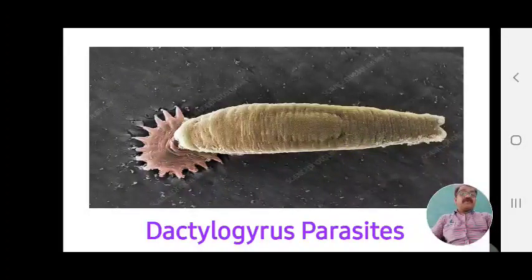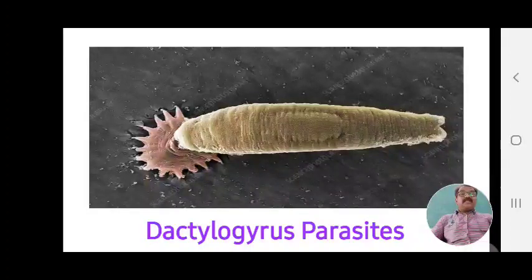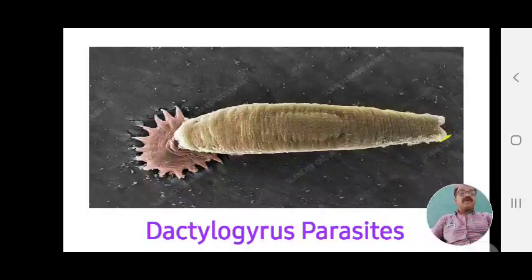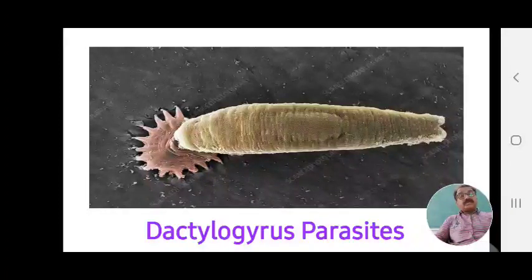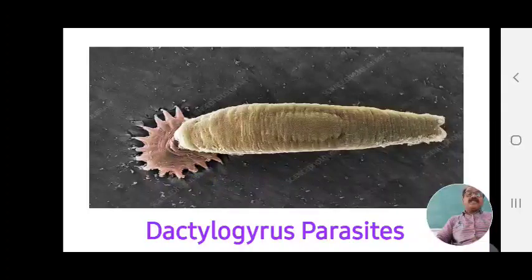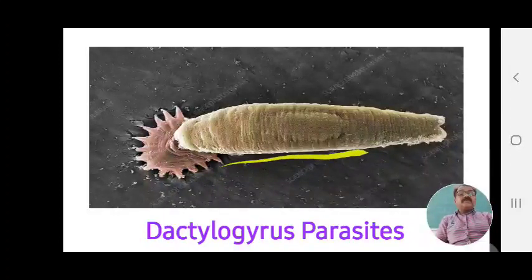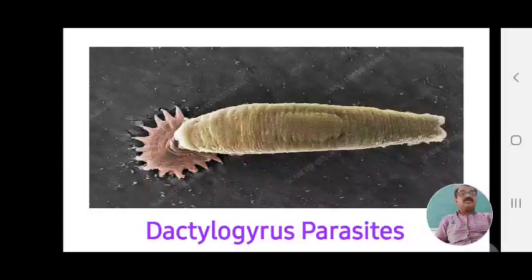This is the Dactylogyrus parasite as seen under the microscope under magnification. The complete body shows two bifurcated lobes. These are the 16 haptors — anchor-like structures which are anchored on the skin, body, or gill part of the fish, holding the parasite in place.